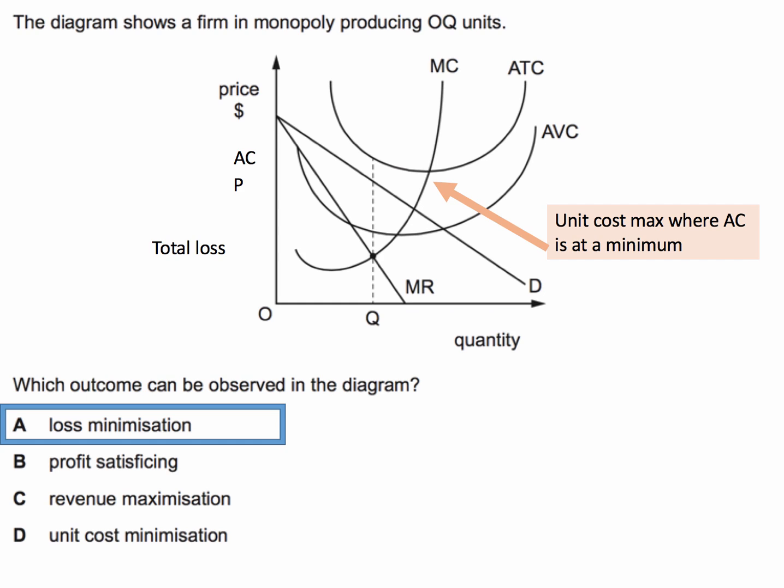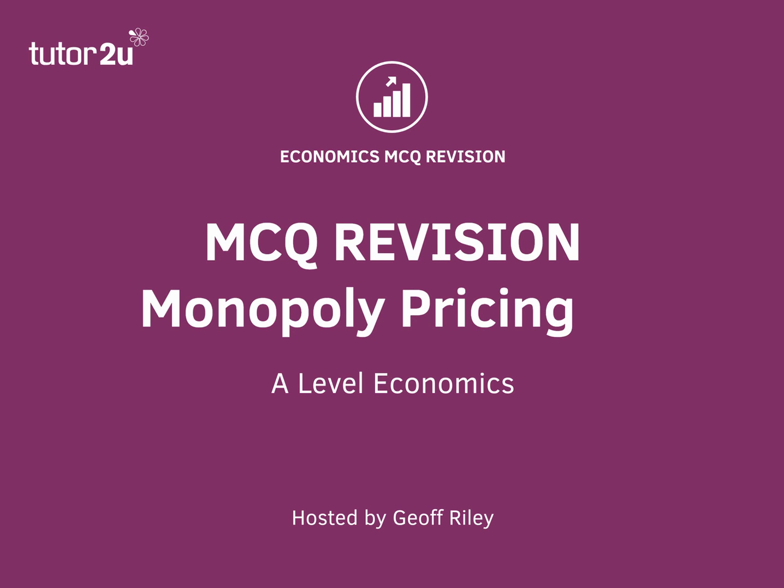So the answer to this question is A. You loss minimise when you attempt to maximise profits. Hopefully you got that right — if you did, you've got a good understanding of a key aspect of the theory of the firm.